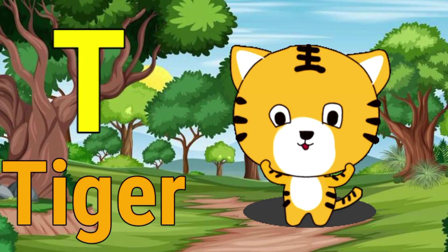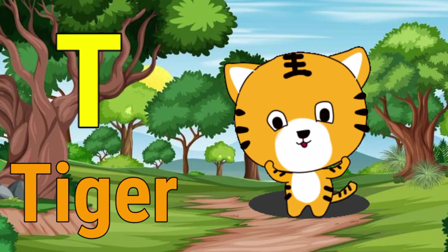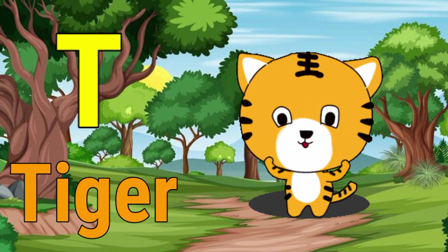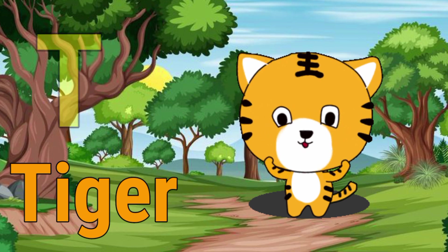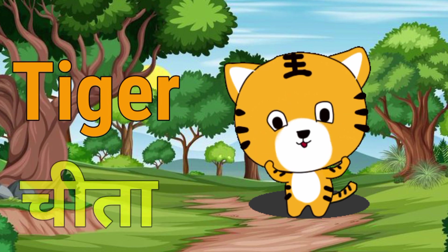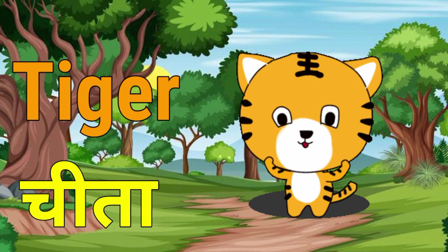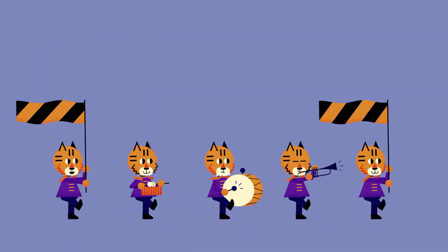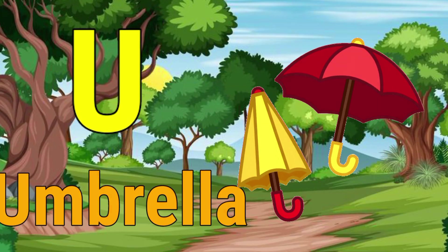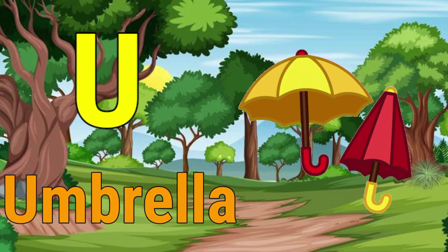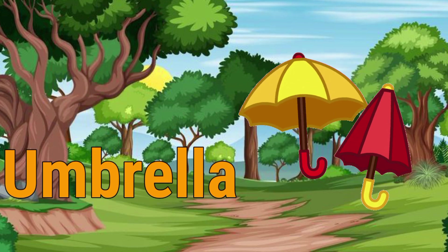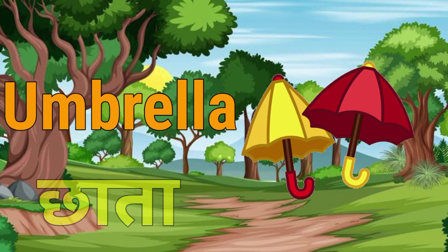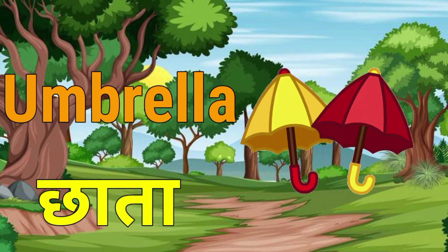T for tiger. Tiger means Cheetah. U for umbrella. Umbrella means Cheetah.